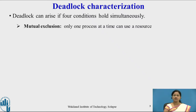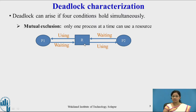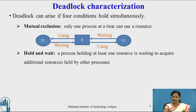If process P1 is using resource R, then P2 must wait for that resource. But if P2 is using resource R, then P1 must wait for the resource. This situation is called mutual exclusion. The next condition is hold and wait.